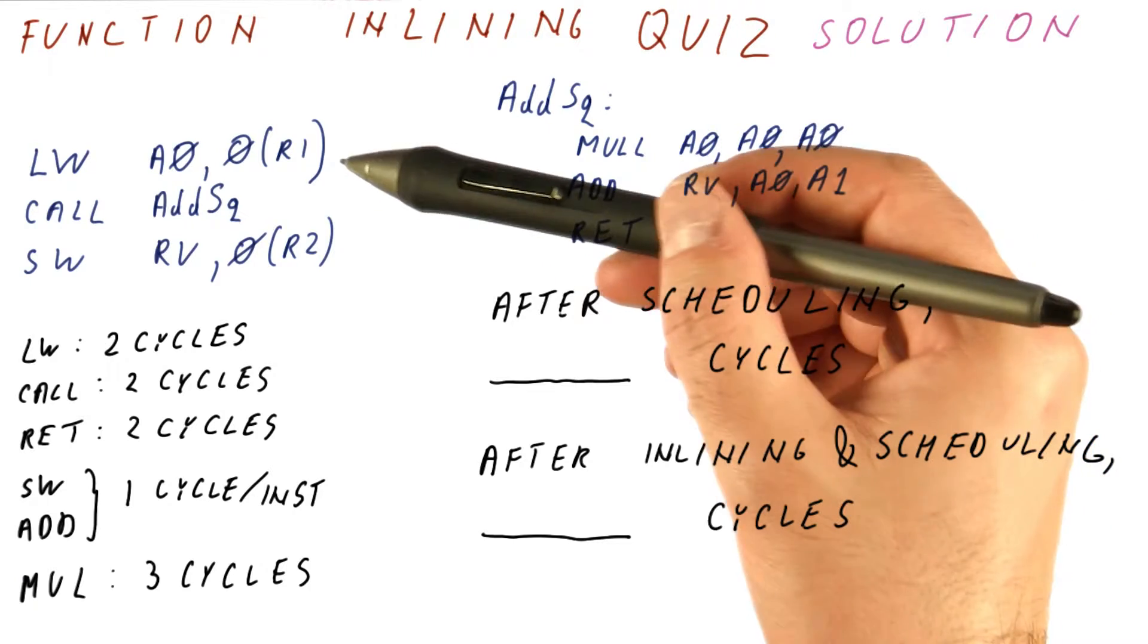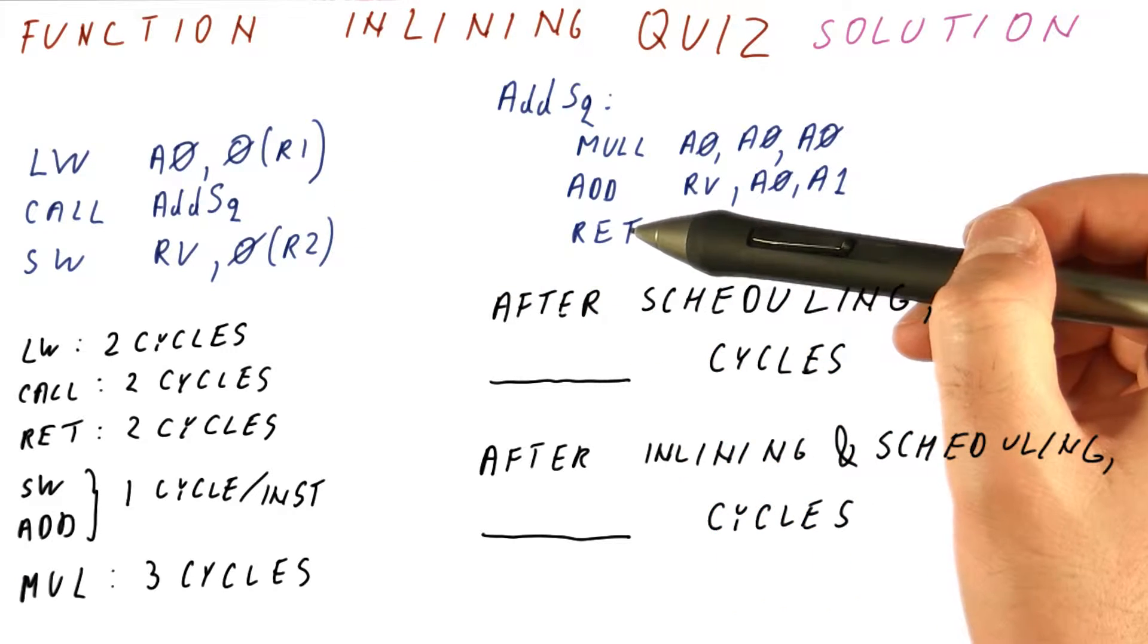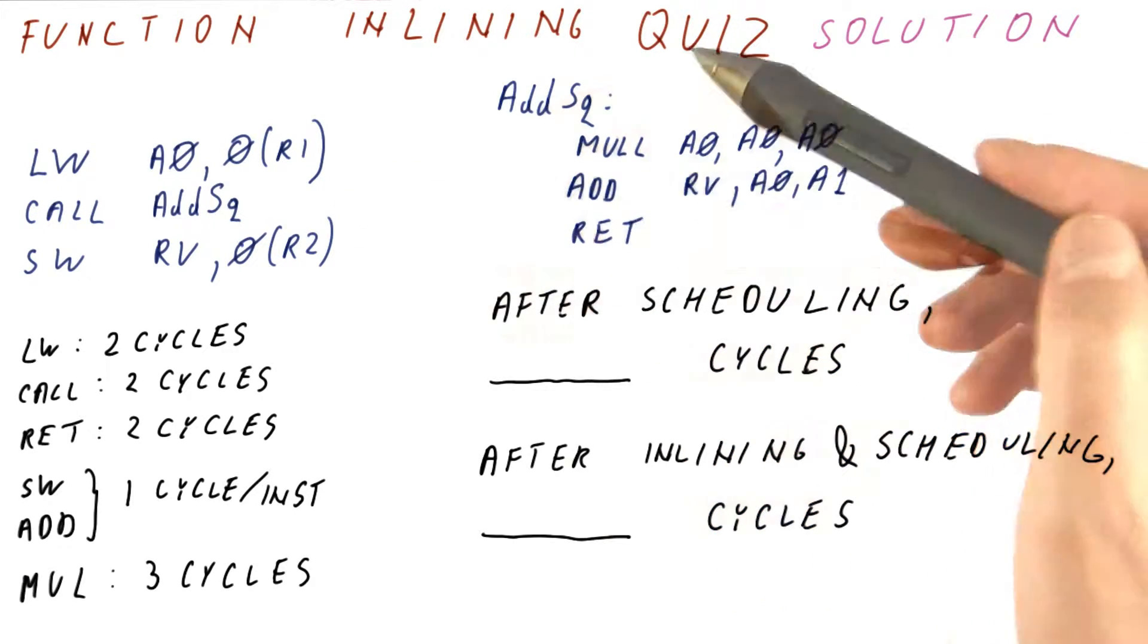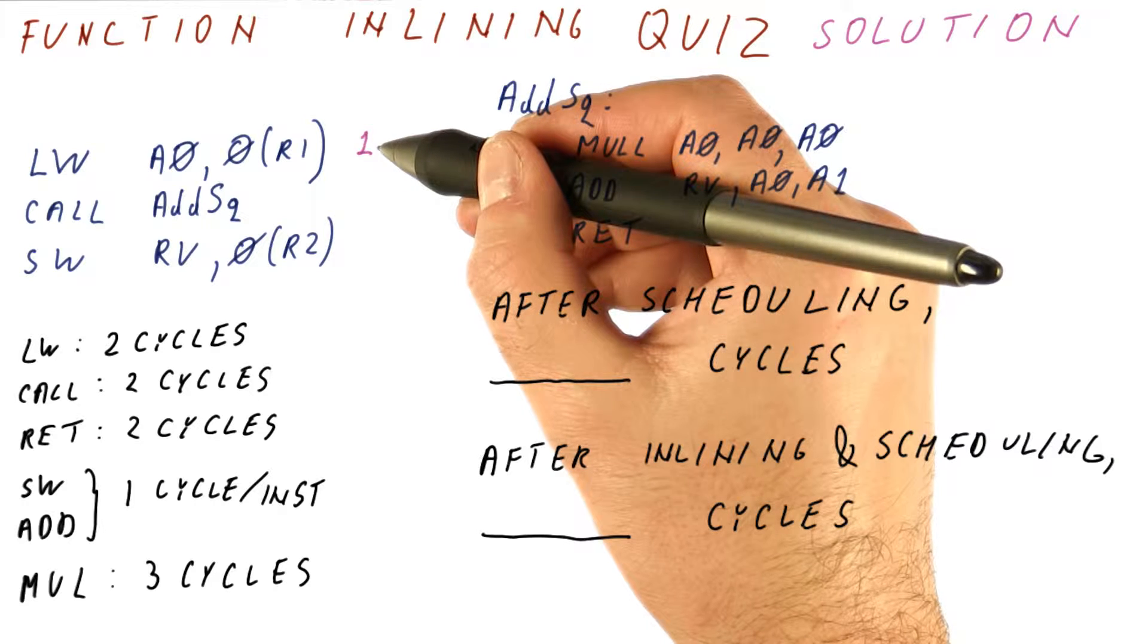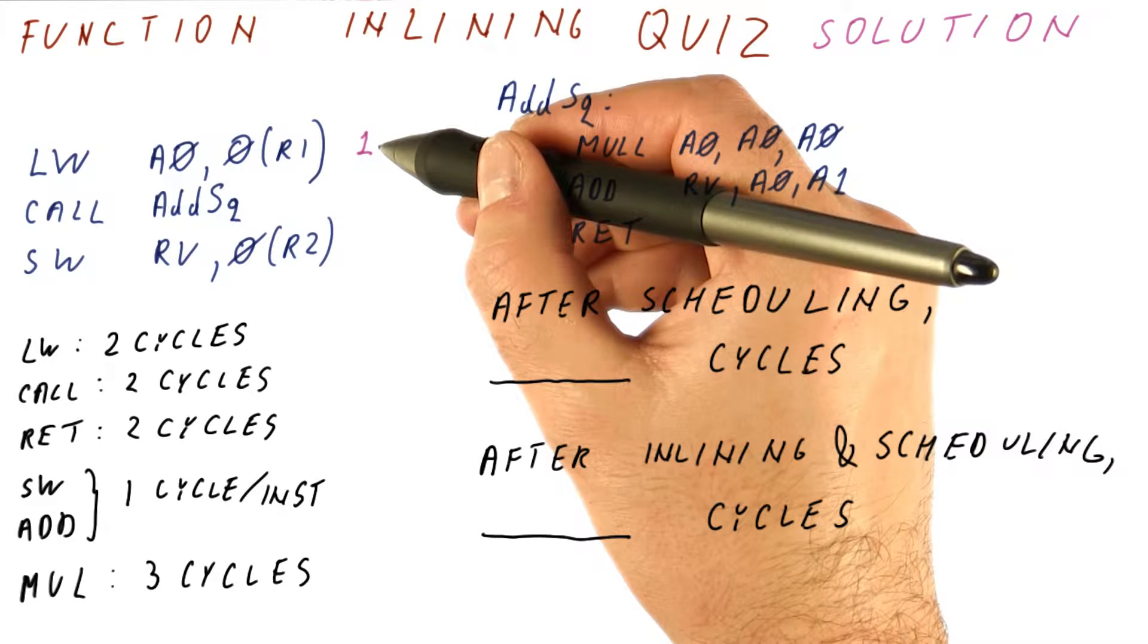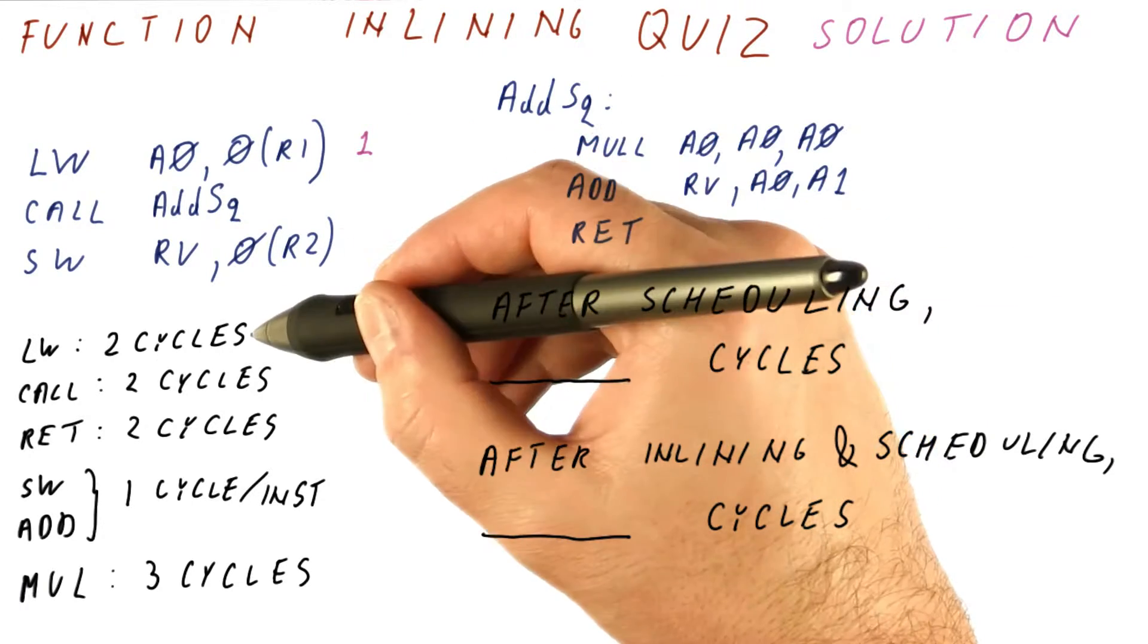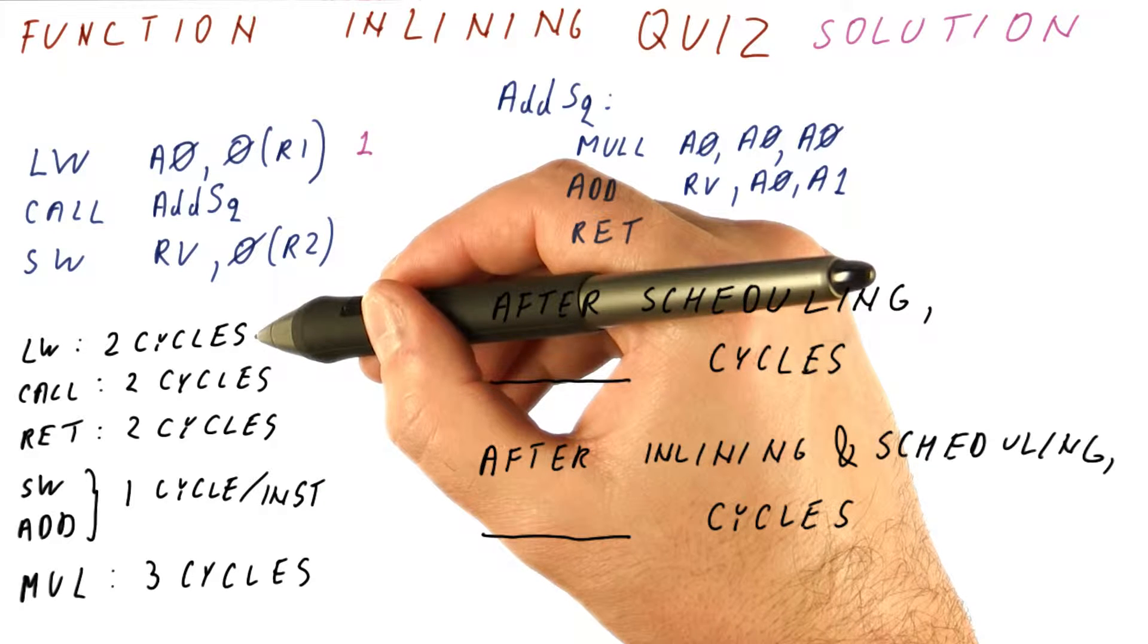So we just need to figure out, for this sequence of instructions, how many cycles does it take to do it? One way of doing that would be to say that the load begins in the first cycle. In the second cycle, it's still going on. So we can use the result in the third cycle.